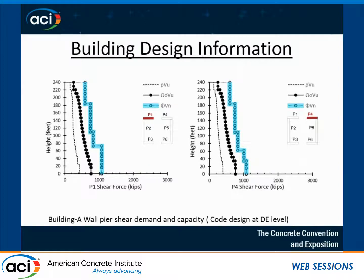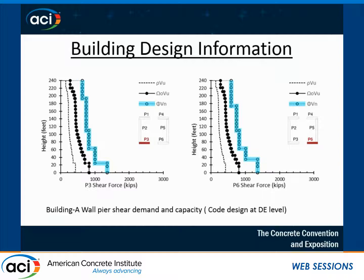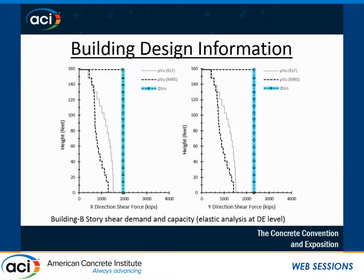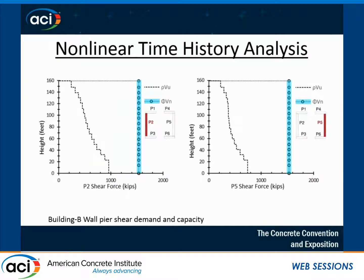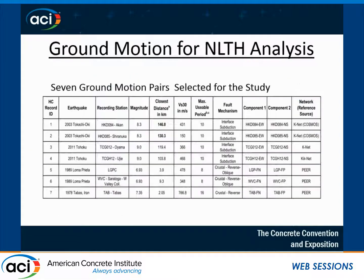For building B, the shear reinforcements are uniform because the minimum shear reinforcement at 0.002 (0.2%) already provides enough shear capacity for this particular building. So it's based on minimum shear reinforcement, not based on shear demand. This is shown for both the coupled wall direction and the non-coupled wall direction. This completes the elastic analysis portion.